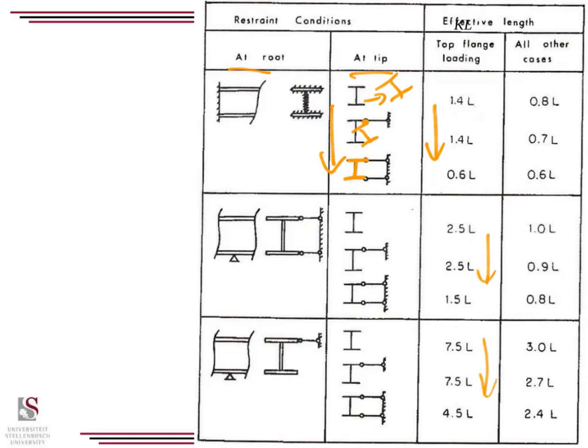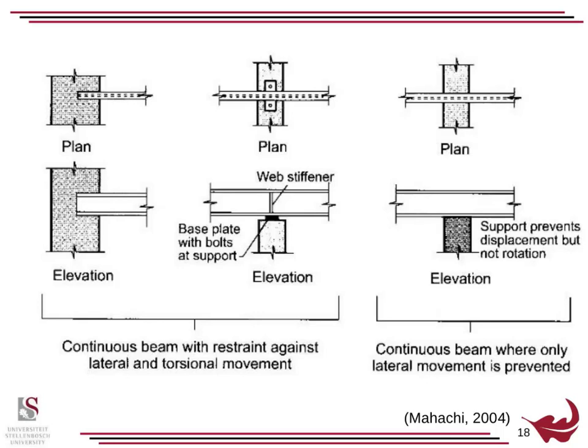Your moment of resistance is highly dependent upon your kL value. If you get your effective length wrong, you will severely under or over predict the capacity of your beam. So just be very careful when it comes to this.